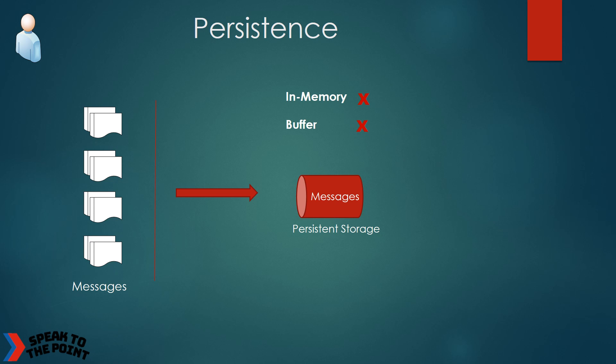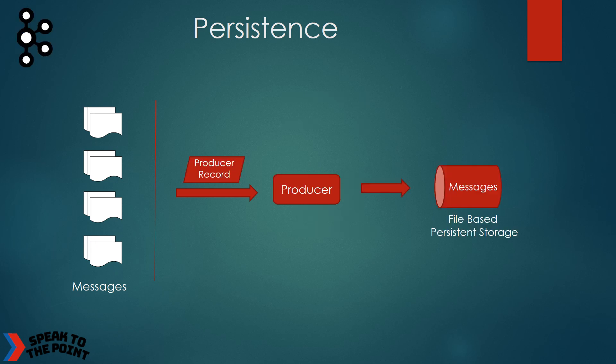My first requirement is persistence. The intermediate storage layer needs to physically store the messages. It should not be just in-memory storage nor on some temporary buffers — it has to put the messages on some physical storage medium. Kafka persists your messages on physical storage. You create a producer record for each message and send it to Kafka using a producer object. Kafka stores these messages on disk in the form of a data file.